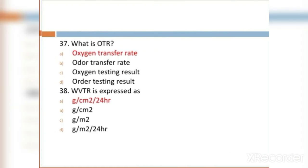MCQ 37: What is OTR? Option A: Oxygen transfer rate. Option B: Order transfer rate. Option C: Oxygen testing result. Option D: Order testing result. Option A, oxygen transfer rate, is the right answer.